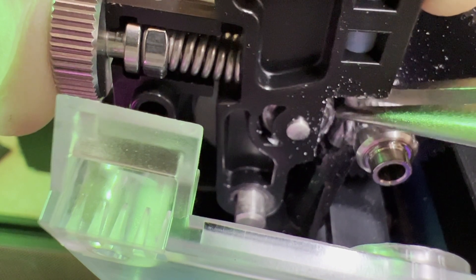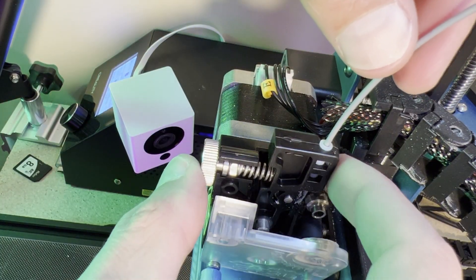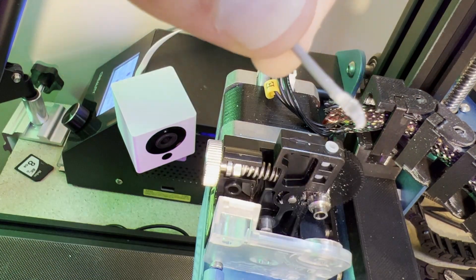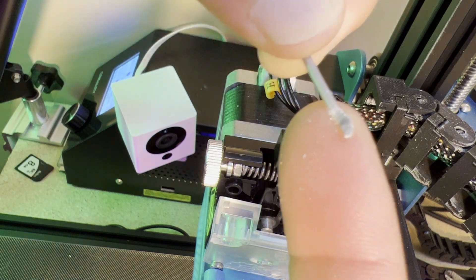You'll want to take a set of needle-nose pliers and pull back the end of the filament that's stuck under the gear. Now we can pull out the filament. You can see where the gear was grinding away at the filament. Let's trim off that damaged part.